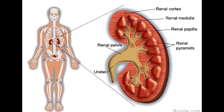Each renal pyramid contains thousands of nephrons. Minute blood capillaries reach each and every one of them, and excess water and some waste is extracted from the bloodstream in each one. The urine formed in the individual nephrons is collected in the collecting duct of the renal pyramid.